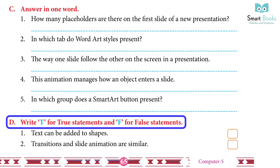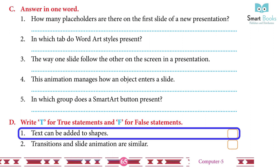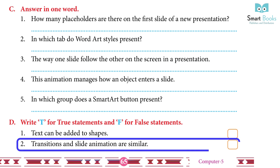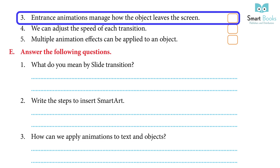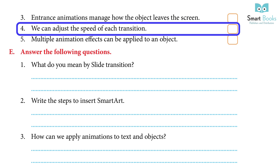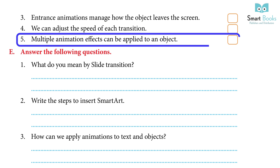True or False: 1. Text can be added to shapes. Answer: True. 2. Transition and slide animations are similar. Answer: False. 3. Entrance animation manages how objects leave the screen. Answer: False. 4. We can adjust the speed of each transition. Answer: True. 5. Multiple animation effects can be applied to an object. Answer: True.